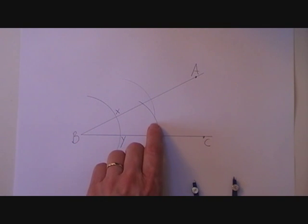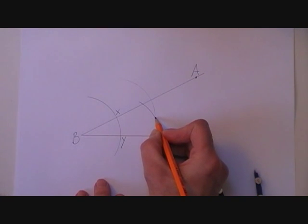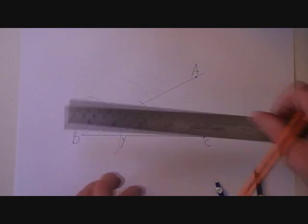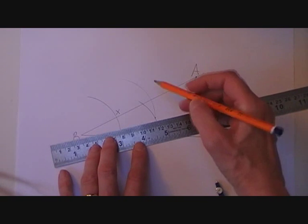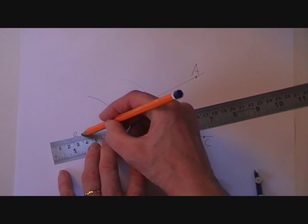Where the second and the third arcs meet, put a point. Take a ruler or any straight edge and take that point and join it up to the vertex B.